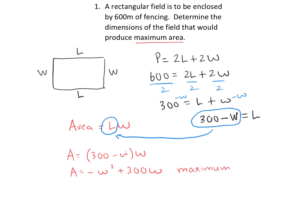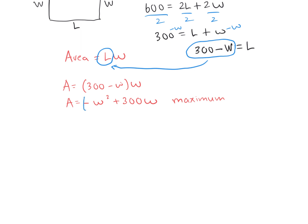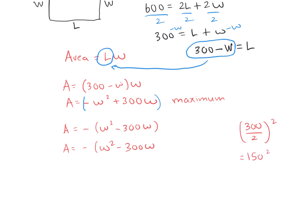To maximize, we need it in vertex form, so we complete the square. First, factor out the coefficient of negative 1 because we can't start the bracket with a negative. Then complete the square by taking 300, dividing by 2 to get 150, and squaring it — 150 times 150 is 22,500 — which makes a perfect square. Remember we have to subtract the same amount.